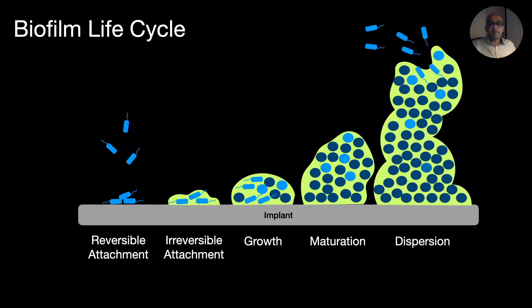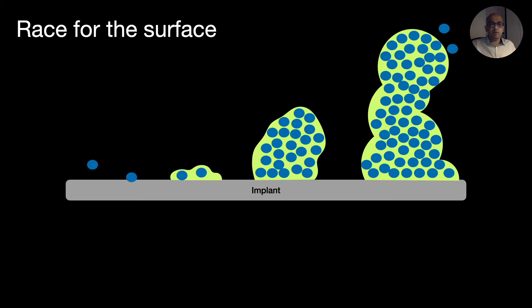The fifth and final stage is dispersion. As the biofilm breaks, some bacteria switch back to planktonic phase and become free to colonize other surfaces and bone.